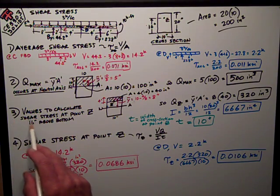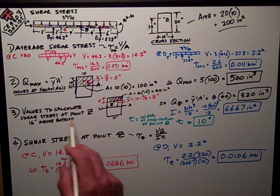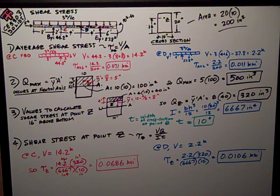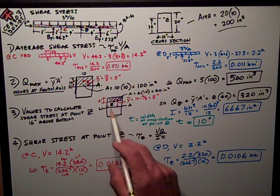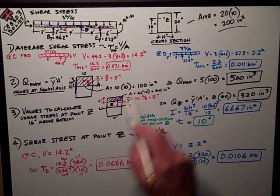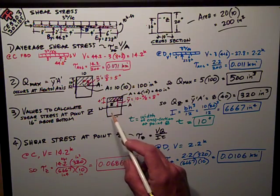So number three was to calculate some values to calculate the shear stress at point Z, 16 inches above the bottom. So here I've drawn it again. Point Z is 16 inches above the bottom, as we see over here, so it's 4 inches from the top.